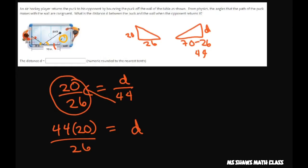So distance equals 44 times 20 divided by 26. So 44 times 20 is 880 divided by 26 equals your distance. So 880 divided by 26 equals 33.846.